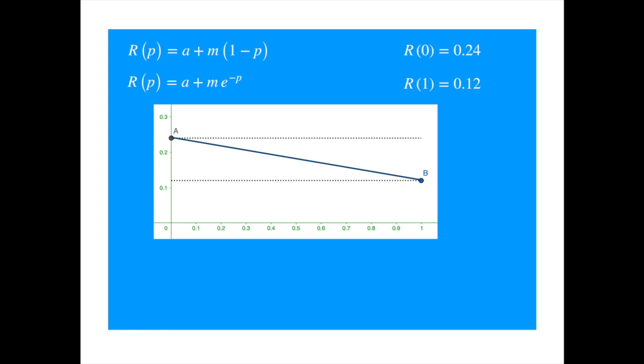And now we see R declines exponentially with the probability of default. To see how this differs from the linear relationship, just recall the expansion of e to the power of x. Now, we keep only the first two terms. We get 1 minus p, as in the linear equation. So the exponential can be viewed as a generalisation.